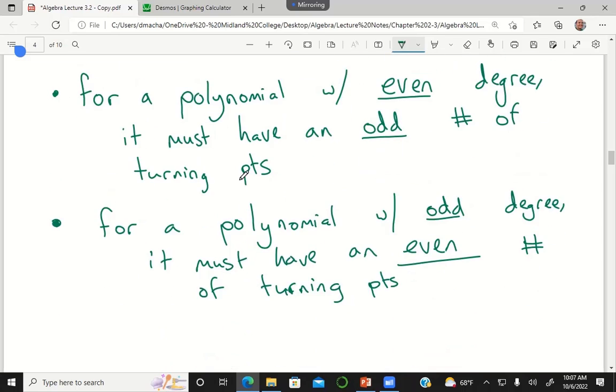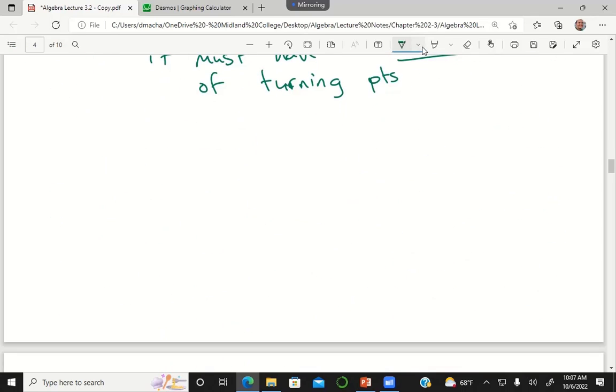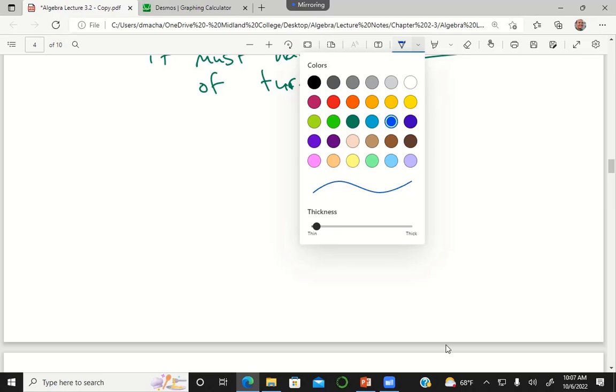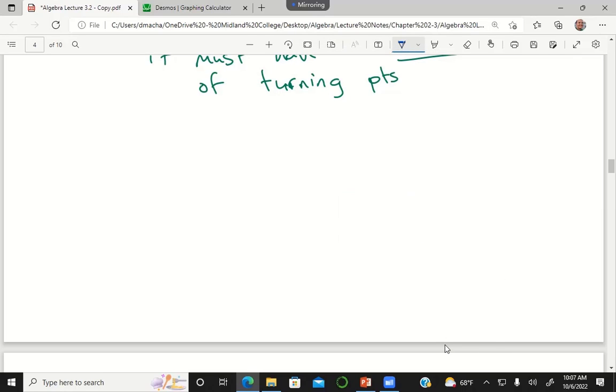So those are my rules about turning points. Really, these rules are good for just checking your work on stuff. So if I tell you that f of x is a polynomial with degree 7, one question I might give you on an exam is which of these are possible graphs of my polynomial? And I'll give you maybe some curves that look like this.